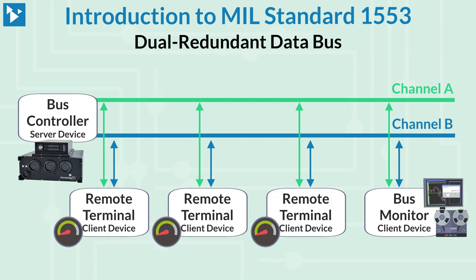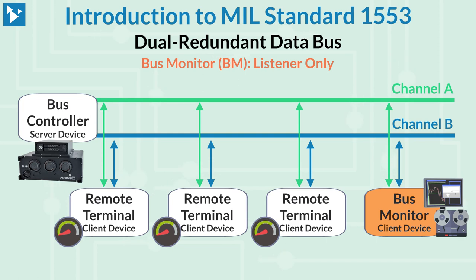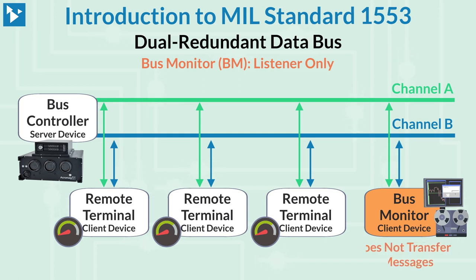The third type of node is a bus monitor. It is a listener only and does not participate in message transfers. Typically, bus monitors are used as a message recorder or black box type function.